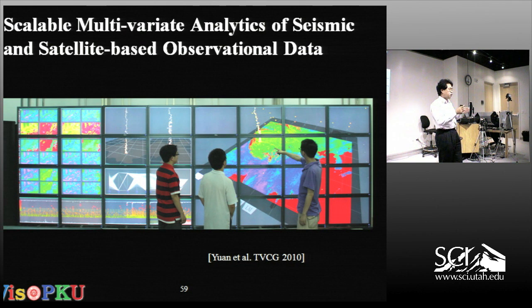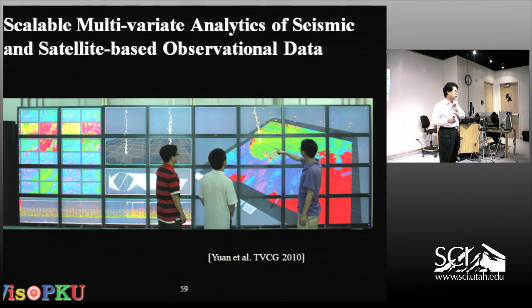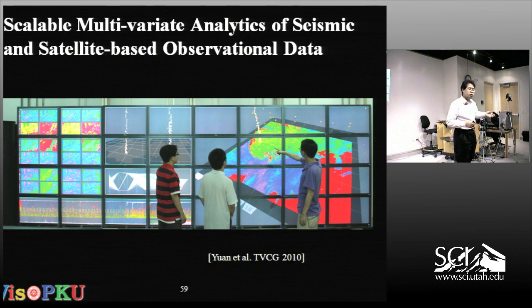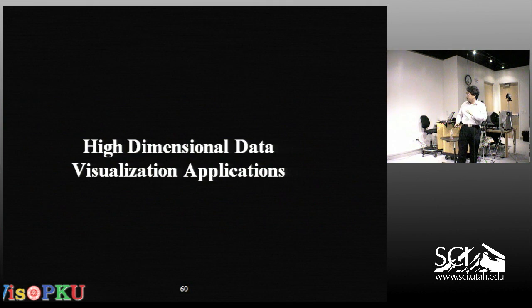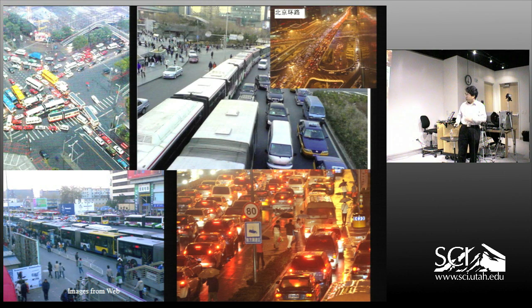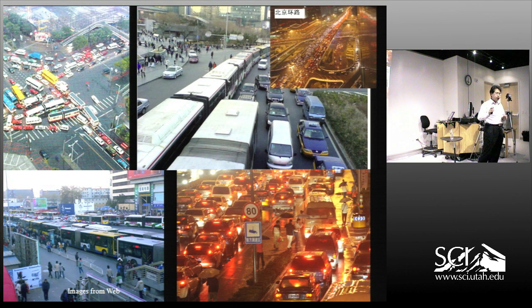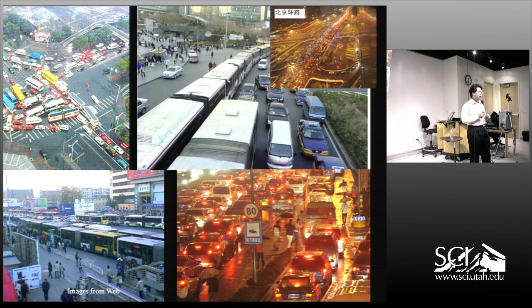Unfortunately, that French satellite stopped working last year, but the good news is China is going to launch another one in about two years. We hope to have our software ready before the launch so they can directly use it. These are national efforts to understand seismic events. Although it's difficult to do prediction, it's possible to use visual analytics tools to understand them. We could also apply this to traffic. Although traffic may not seem multivariate at first, we found that we could manage it as a multivariate problem.